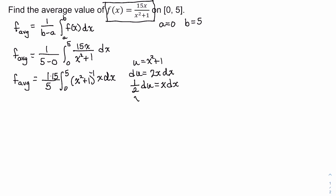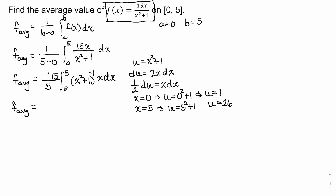Since we have a definite integral, we also need to convert the limits of integration. When x = 0, u = 0² + 1 = 1. When x = 5, u = 5² + 1 = 26. Back in our expression, 1 × 15 / 5 = 3, and the integral becomes 3 times the definite integral from 1 to 26 of u^(−1) times ½ du.